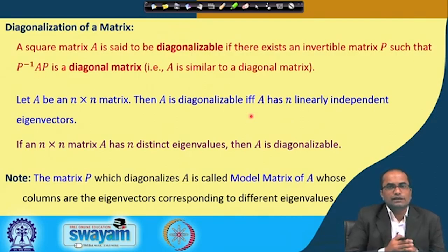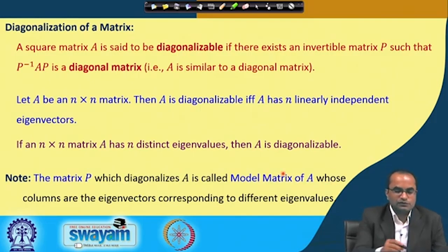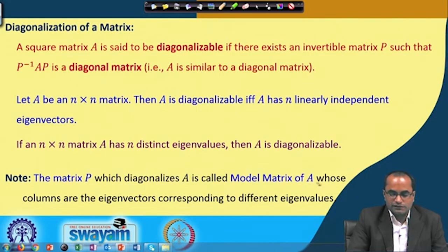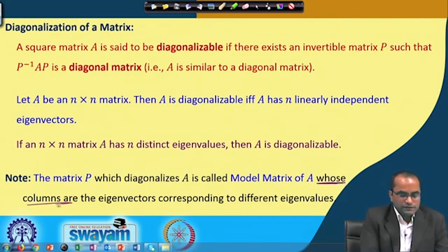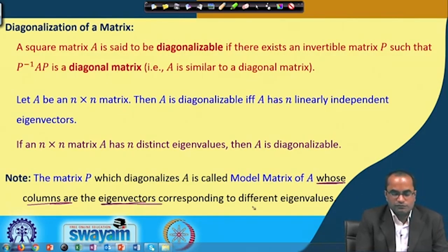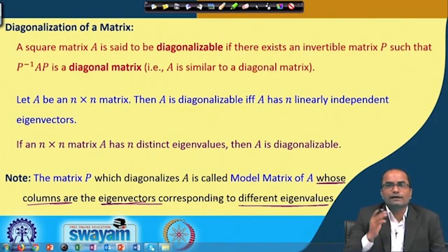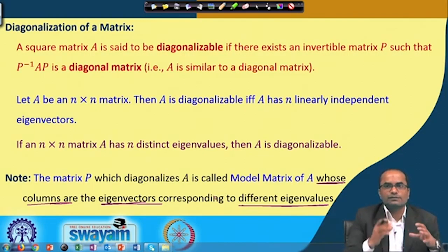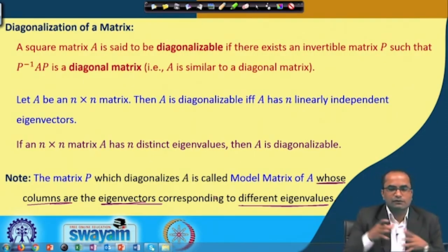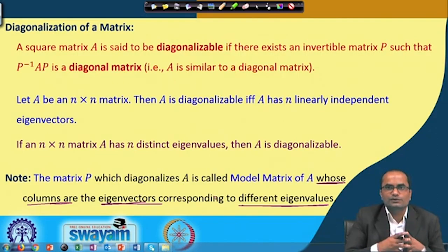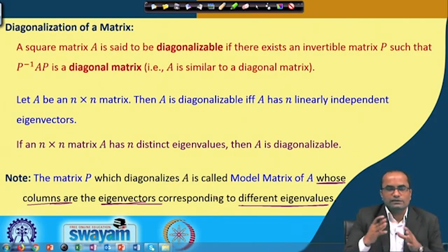The matrix P which diagonalizes A is called the modal matrix of A. Its columns are the eigenvectors corresponding to the different eigenvalues. When we place n linearly independent eigenvectors as columns of P and compute P inverse A P, we get a diagonal matrix whose diagonal entries are the eigenvalues corresponding to those eigenvectors, in the same order.